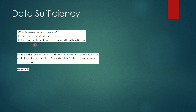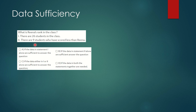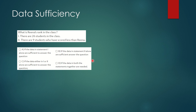The first question is asking: what is Rina's rank in the class? In data sufficiency questions, we are provided with one question and two follow-up statements. We are also provided with four or five options, and we must determine if Statement 1 alone is sufficient, Statement 2 alone is sufficient, either one is sufficient, or both statements together are needed to answer the question. A fifth case also exists where neither statement is sufficient.